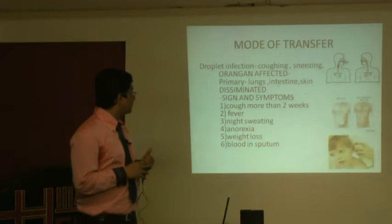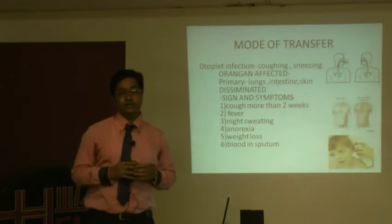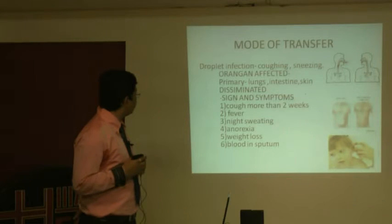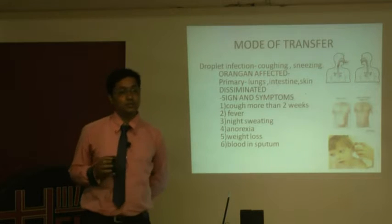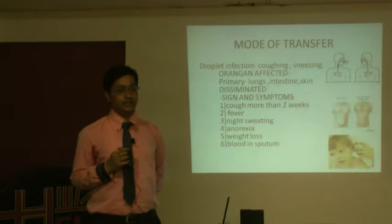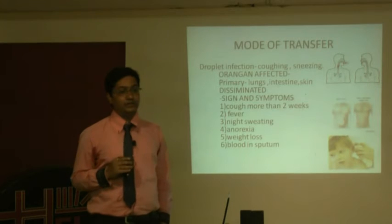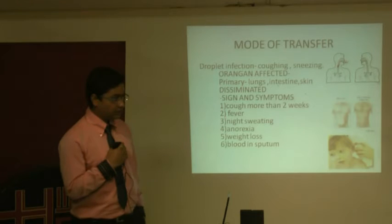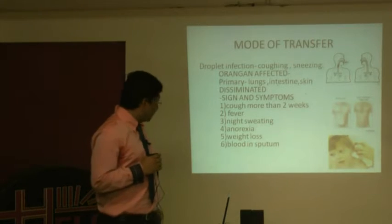In disseminated tuberculosis, organisms present in the lungs, skin, or intestine travel via the bloodstream to various organs like the brain and kidneys. The most common form is TB meningitis, which is invariably fatal if not treated promptly, and is most common in children. To prevent this, every child is given the BCG vaccine at birth.